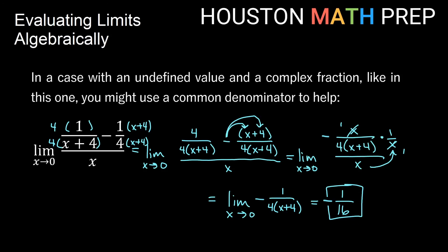So in summary: if you can plug in directly, that's the easiest path. You may need to factor and reduce, then plug in. You may need to multiply by a conjugate, reduce, then plug in. Or you may need a common denominator, reduce, then plug in. All of these methods work toward evaluating the limit algebraically by substituting that x value. Thanks for watching everyone — we'll see you in the next video.